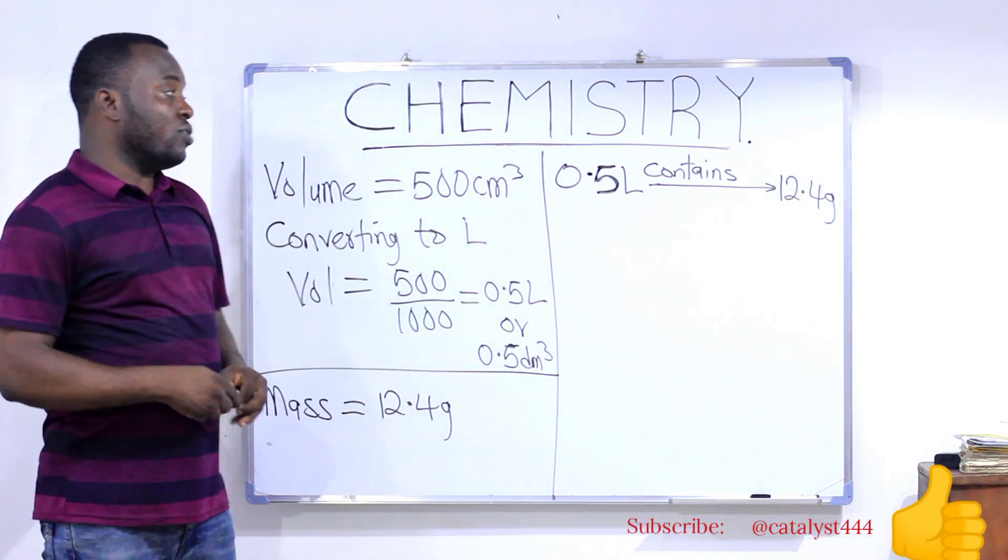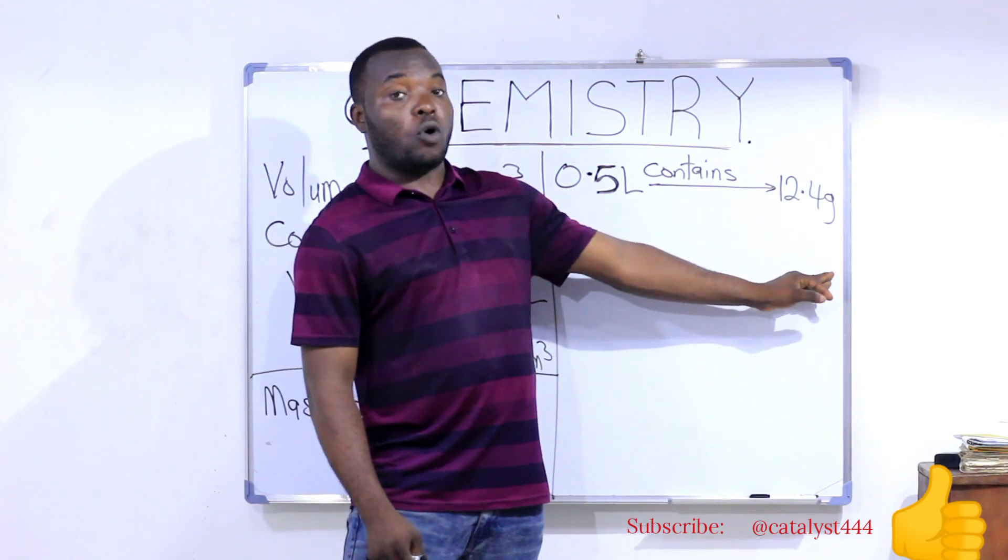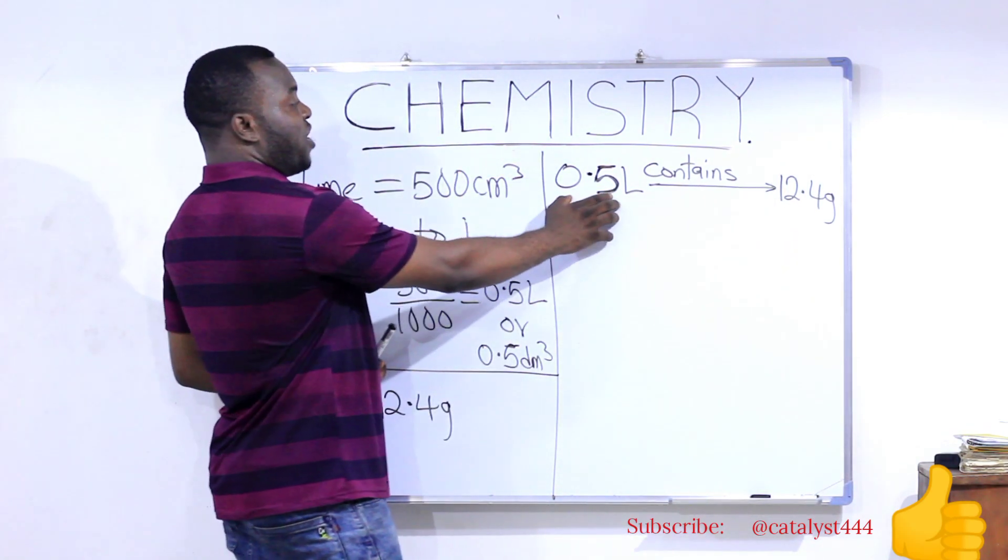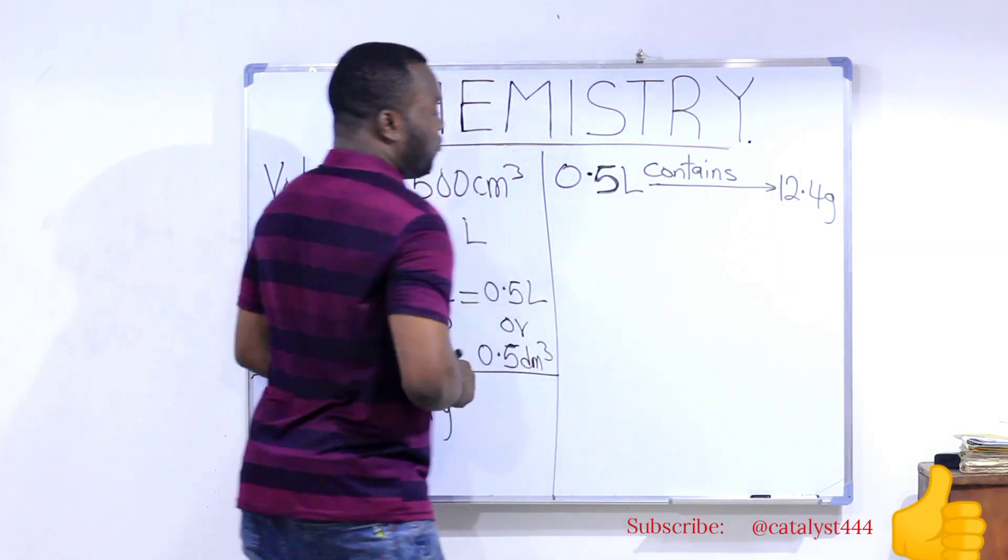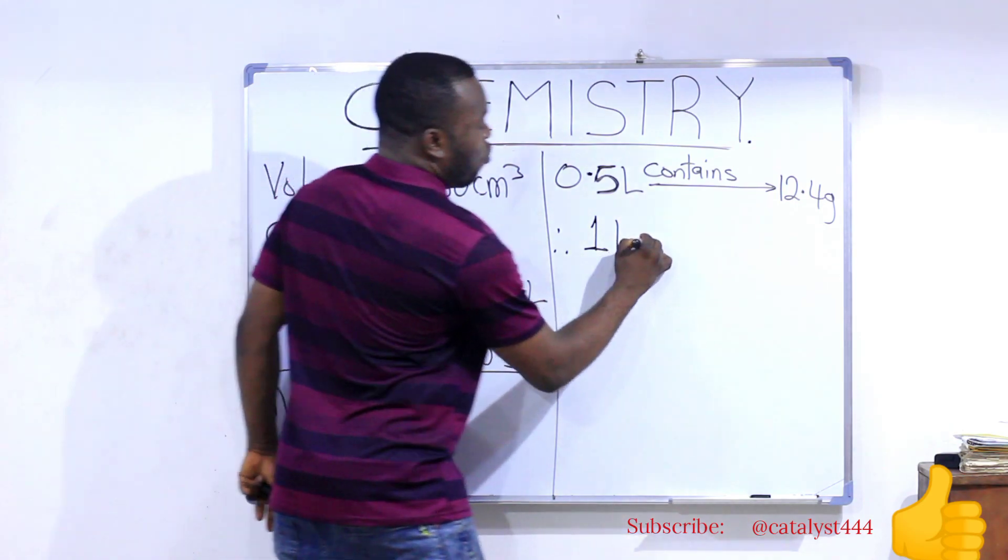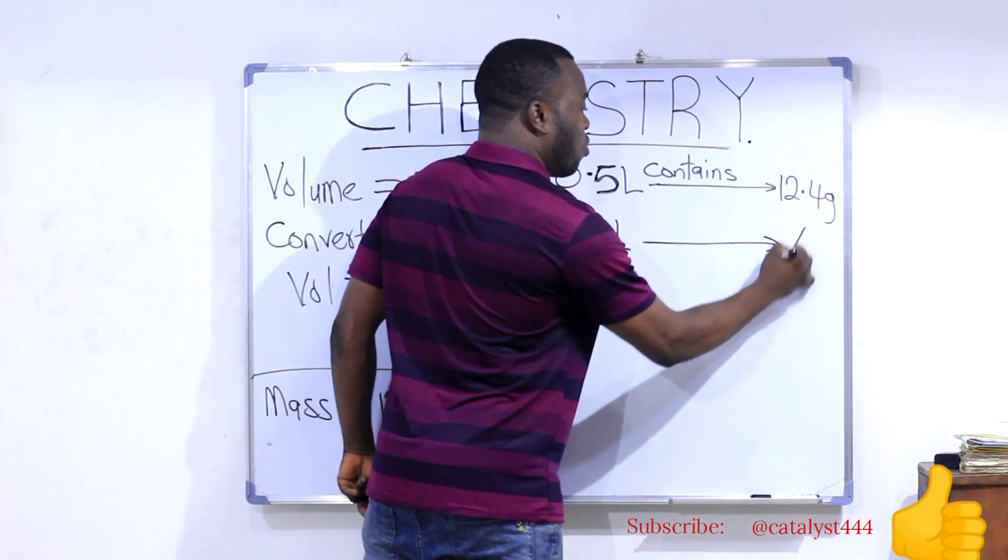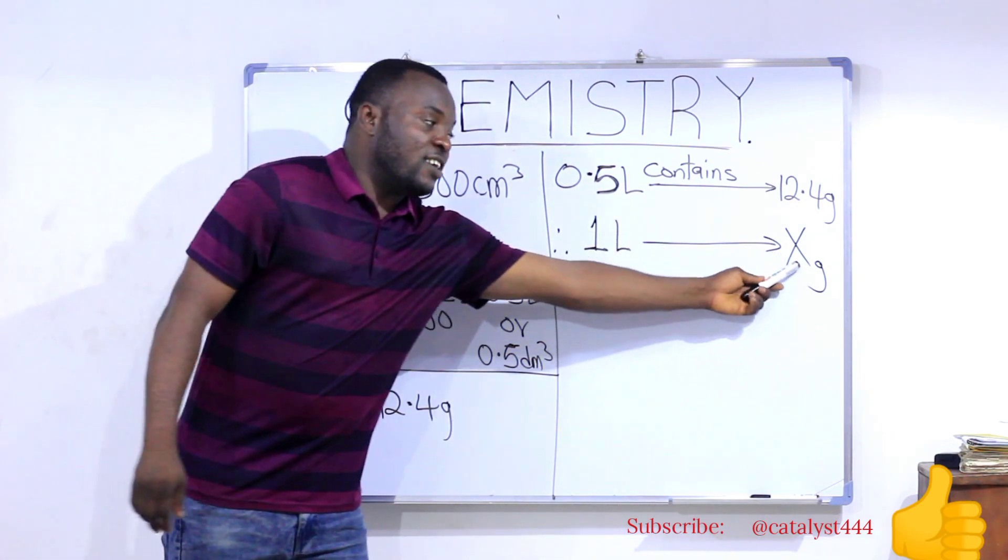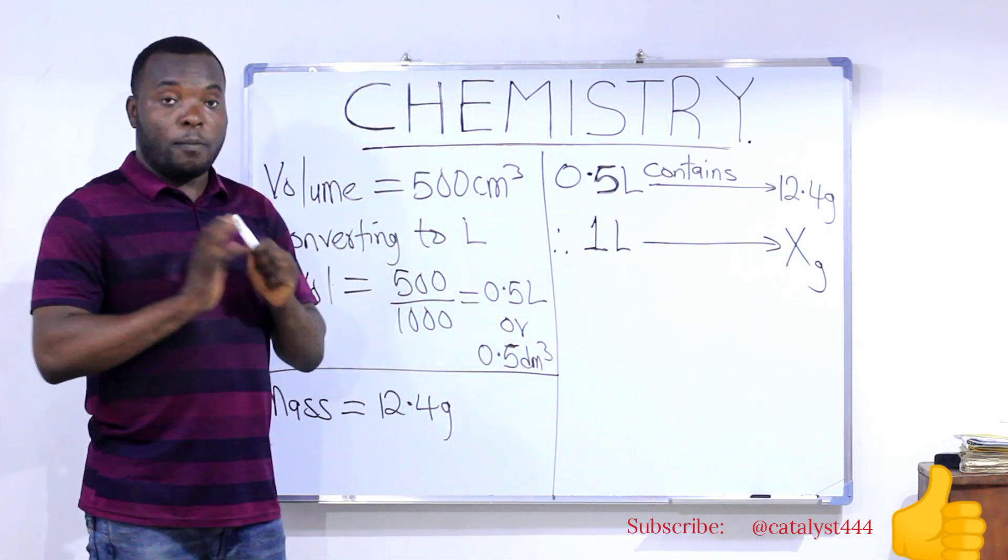Your mass concentration is the number of grams of the salt that will be contained in one liter. That's all. So, if 0.5 liters contain 12.4 grams, therefore, one liter will contain, we don't know, we can call it x grams. So, we find our x and that is our answer. That is our mass concentration.